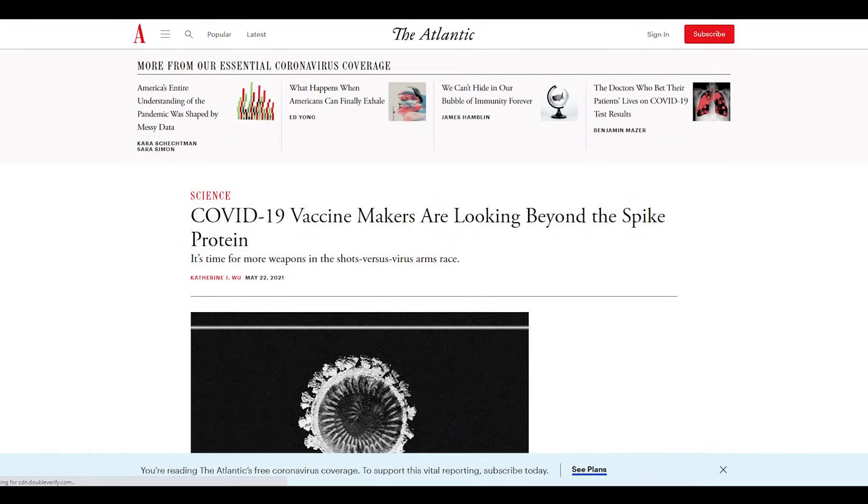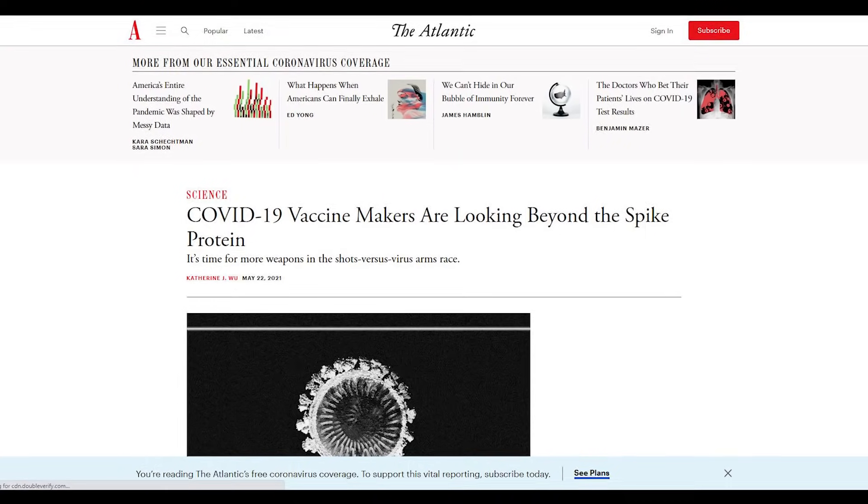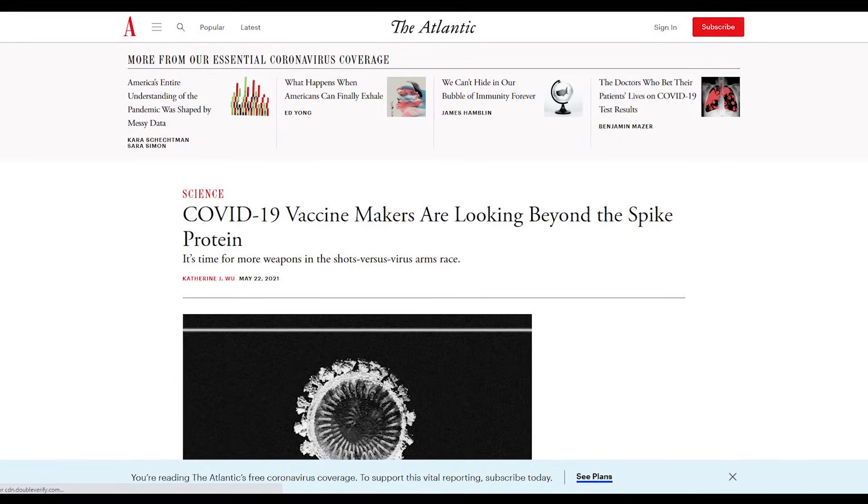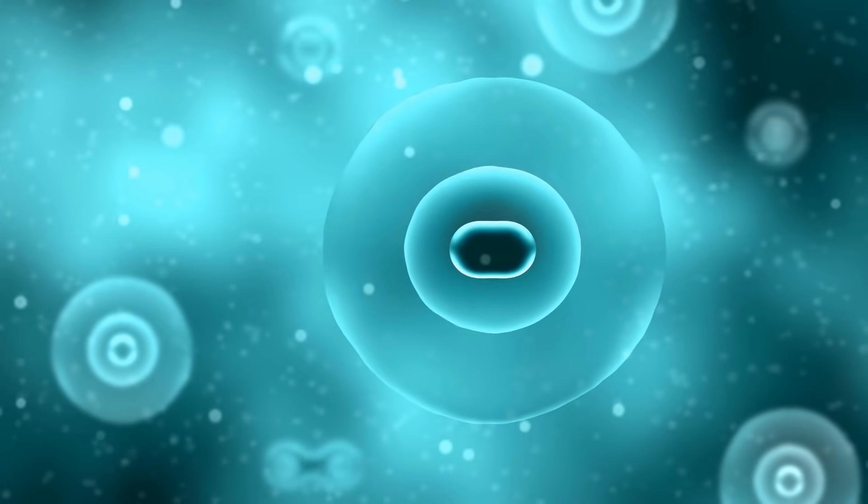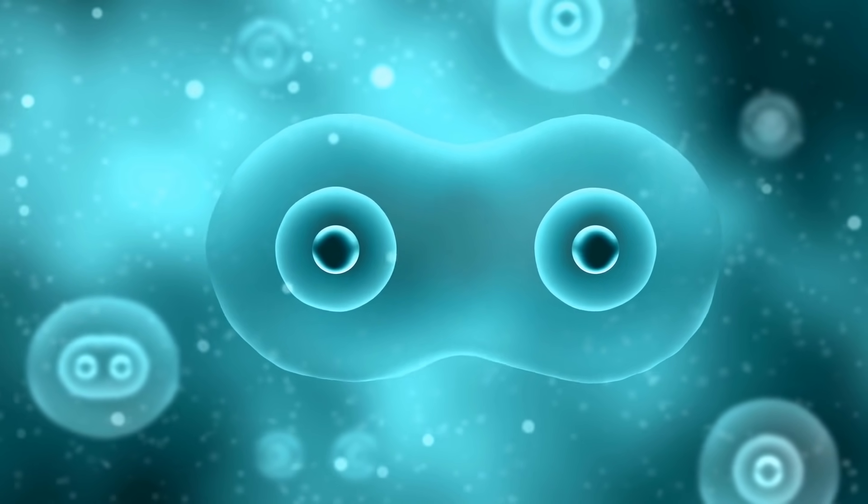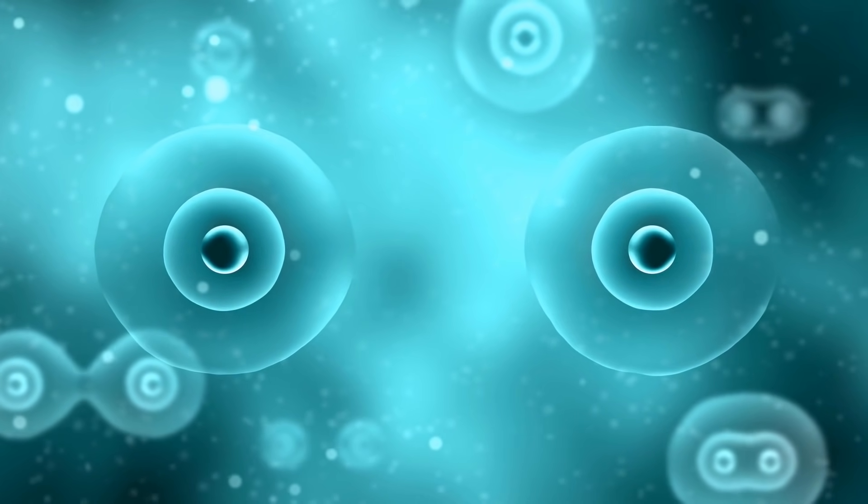According to The Atlantic, Gritstone CEO Andrew Allen said that T cells can actually target various parts of the virus, many of which are not included in most vaccines. Those parts do not mutate fast unlike the spike protein but do respond to immune cells.